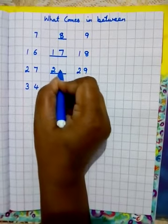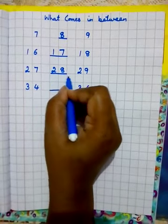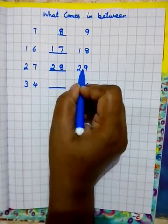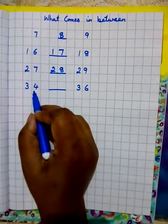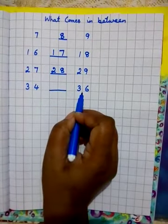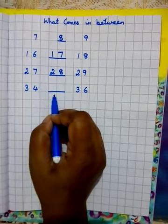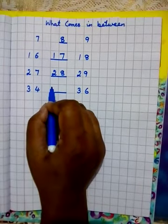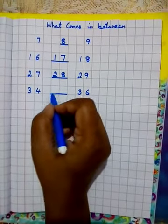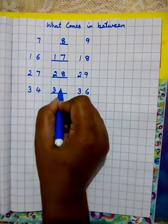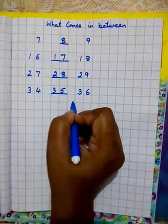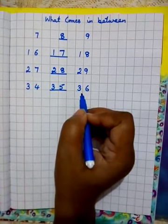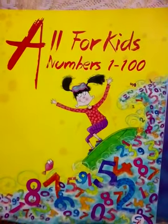So 28 is in between 27 and 29. Next numbers are 34 and 36. What comes after 34? 35. What comes before 36? 35. So 35 is in between 34 and 36. Now take out your book.